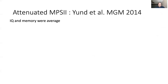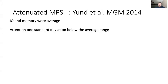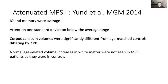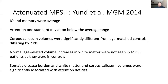Corpus callosum was smaller by 22% compared to age-matched controls. The normal age-related white matter increases were not seen compared to controls. The somatic disease burden and white matter and corpus callosum changes were interrelated — there was an association in severity of somatic disease and brain phenotype, which is an interesting finding. We have seen this also in MPS-1.